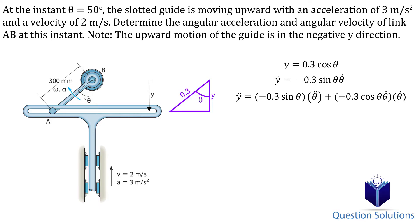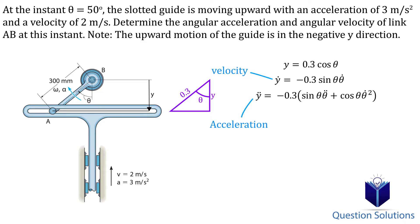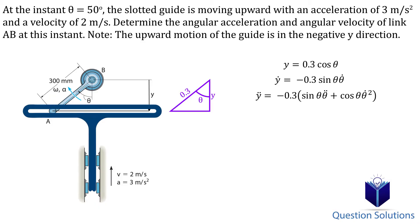It's important to realize that this y value is actually a displacement — it measures where the slotted piece is with respect to the link. That means one derivative gives us velocity and the second derivative gives us acceleration. So ẏ is actually velocity and ÿ is acceleration. This velocity and acceleration is of the slotted guide, not the link.